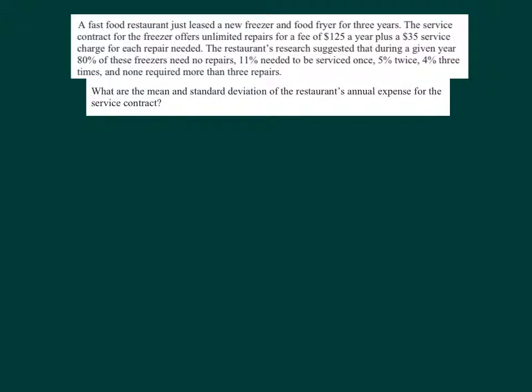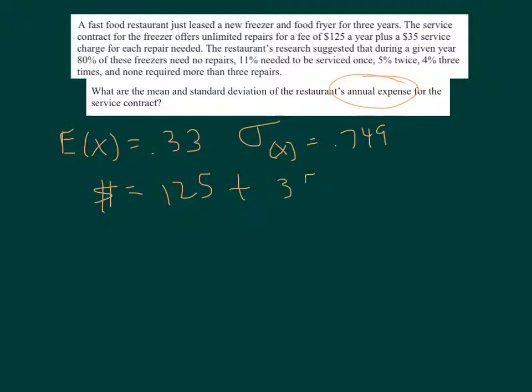Now, what are the mean and standard deviation of the restaurant's annual expense? We have an expected value of X for the number of repairs per year is 0.33, and a standard deviation of repairs is 0.749. The cost of this thing is equal to $125, this thing being the contract, plus $35 times a repair. So if we expect 0.33 repairs, that's 125 plus 35 times 0.33, which gives us an annual cost of $136.55.